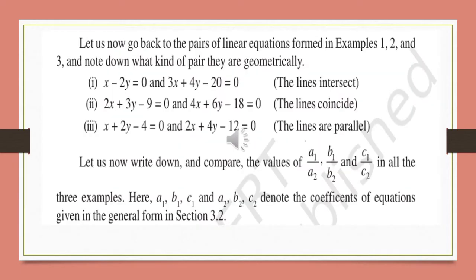Let's go back to the pairs of linear equations. Three examples are given. In the first example, if you plot the points the graph shows intersecting lines. In the second example, the graph shows parallel lines which never intersect. We can conclude: intersecting lines means one solution, coincident lines means infinitely many solutions, and parallel lines means no solution at all.